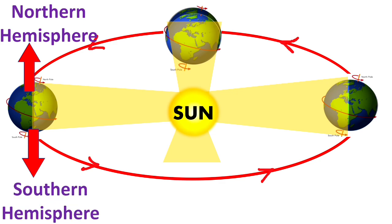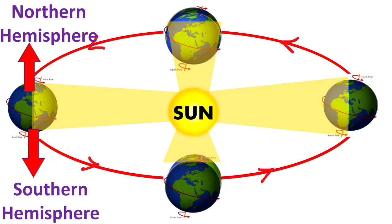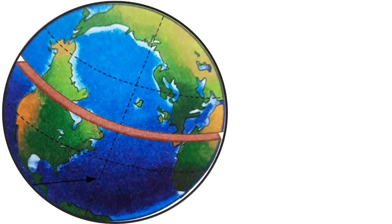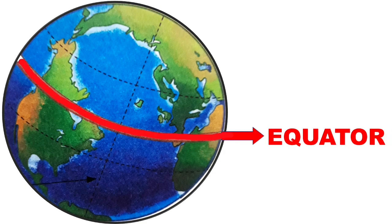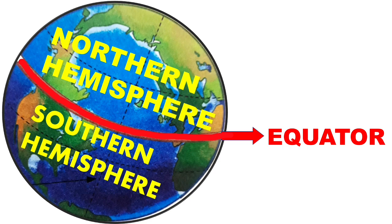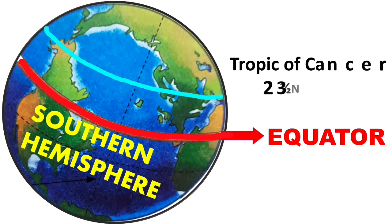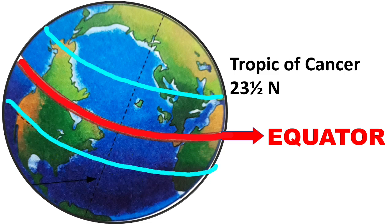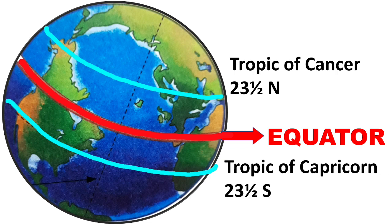To understand how seasons change on the earth, we need to see some useful terms. The imaginary line running through the center of the earth is the equator. The equator divides the earth into two equal parts: the northern hemisphere and the southern hemisphere. The imaginary line called the Tropic of Cancer lies in the northern hemisphere at 23 and a half degrees north. Another imaginary line, the Tropic of Capricorn, lies at 23 and a half degrees south in the southern hemisphere.